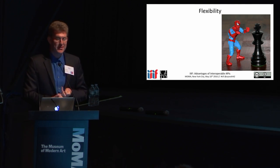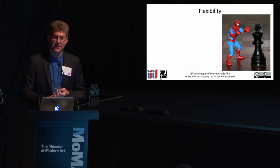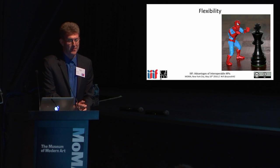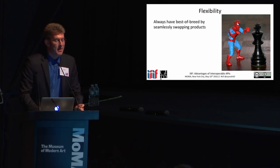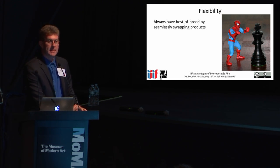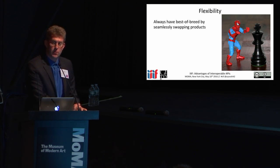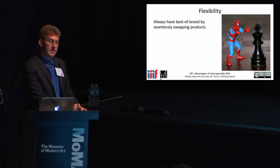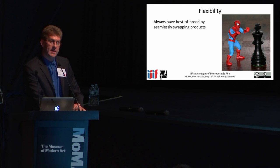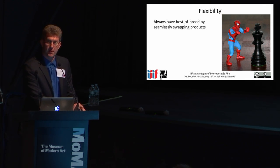If you want to use other things along with AAF — say you want to import your Spider-Man to play along with your king — that's fine. You always have the best of breed products because you can seamlessly swap them in and out. If someone comes up with a better viewer, you can swap your current viewer out for the new viewer without changing any of your back end. You don't need a new image server, because they already speak AAF between the client — the viewer and the server. Likewise, if you're using Loris or IIP and someone comes up with a new fantastic image server that doubles the speed and has better caching, no problem. You can continue to use your customized version of Mirador or the Universal Viewer with your new server, because AAF provides that layer of interoperability between them.